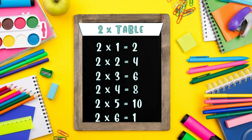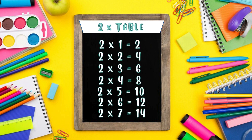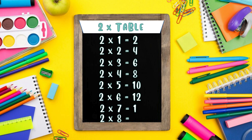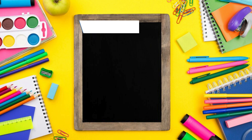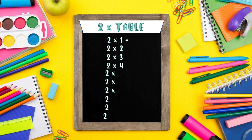Two times six is twelve. Two times seven is fourteen. Two times eight is sixteen. Two times nine is eighteen. Two times ten is twenty.